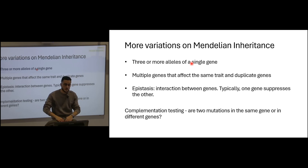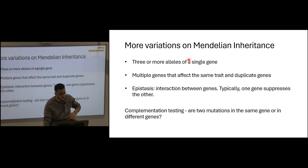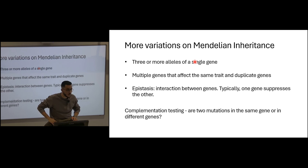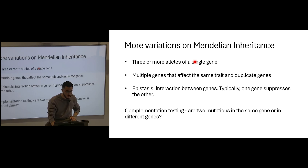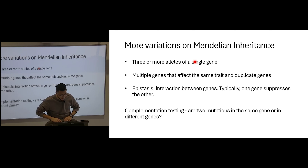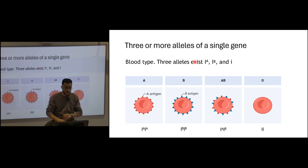Now there are other variations. Last lecture we looked at incomplete dominance, co-dominance, and recessive lethal. There are also other ways for inheritance to happen which change the ratios we learned. One of them is the existence of three or more alleles in the same gene — you could have multiple variations of the same gene. You can also have multiple genes affecting the same trait — for example, eye color is controlled by about 16 genes. And then there's this thing called epistasis, which refers to the interaction between genes. One gene can suppress another gene or activate it.